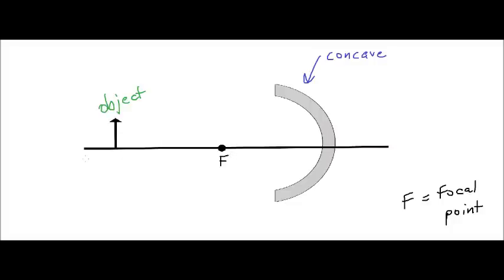We've also got this flat line, which is referred to as our principal axis. The principal axis is pretty much the so-called invisible floor on which our object lies. The point in the middle where the principal axis hits the actual mirror is referred to as our vertex.